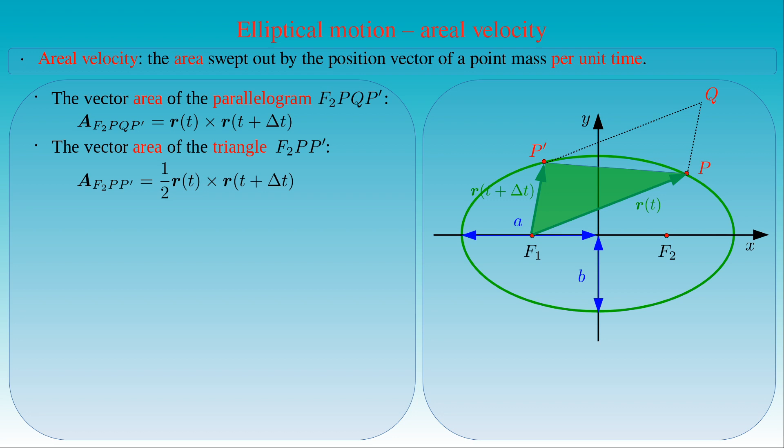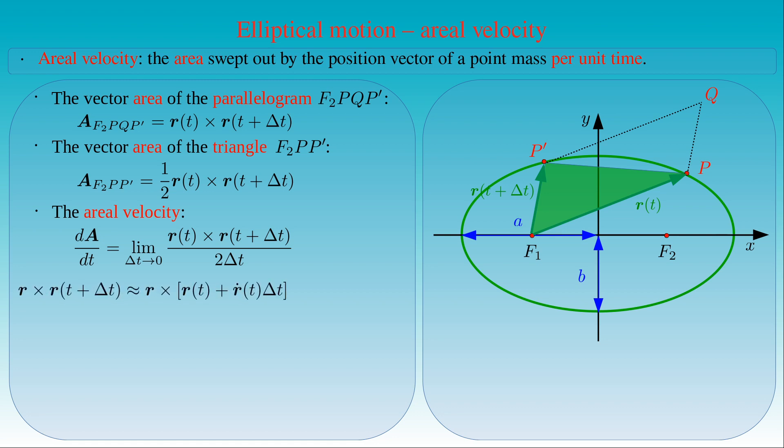We can use this approximation with the triangular area to define the aerial velocity of the point mass traveling on the ellipse, if we take the ratio of the vector area of the triangle to the duration delta t, and compute its limit as delta t tends to zero. Now we can approximate the cross product as follows: R(t + delta t) can be written as R(t) plus the time derivative of R(t) times delta t in the first order.